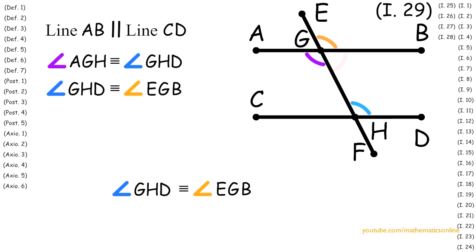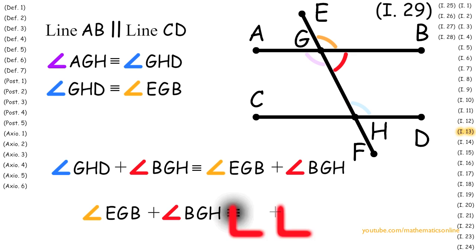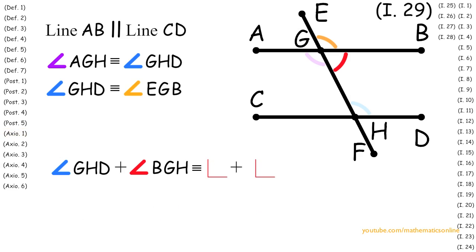With angle BGH and Axiom 2, we attain angle GHD plus angle BGH is congruent to angle EGB plus angle BGH. By Proposition 13, the adjacent angles EGB and BGH must be congruent to the sum of two right angles. Since angles GHD and BGH are congruent to the adjacent angles, then by Axiom 1, angle GHD plus angle BGH are congruent to the sum of two right angles.